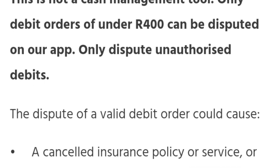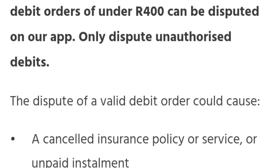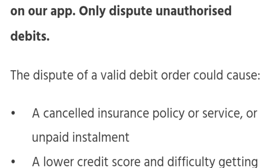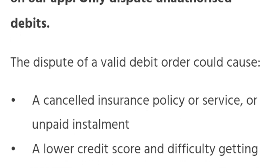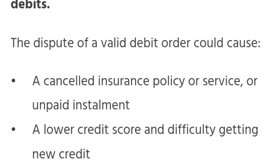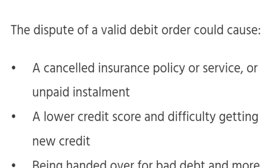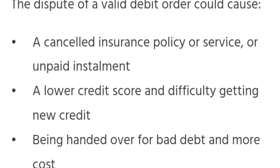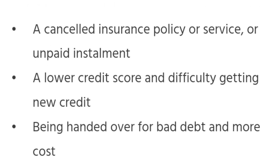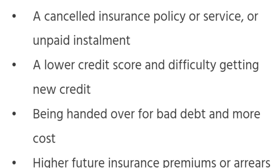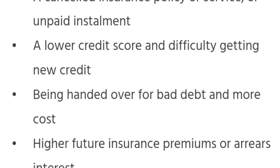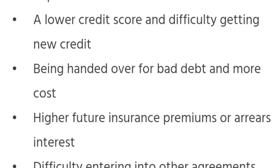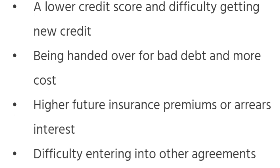Disputing a valid debit order could lead to some consequences. For example, you might risk having your insurance policy or service canceled, or face unpaid installments. This could also lower your credit score, making it harder to obtain new credits. Additionally, there's a possibility of being handed over for bad debt, which may incur higher costs, higher future insurance premiums, and arrears interest. It may also affect your ability to enter into other agreements as well.